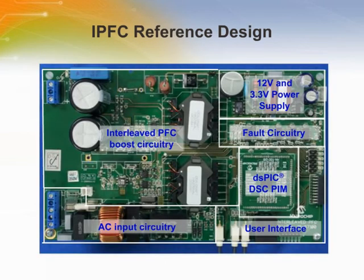The interleaved power factor correction reference design board can be divided into six main functional blocks: the power factor correction boost circuitry, the AC input block, the power supply block, the fault circuitry block, and the user interface and programming block. The two inductors can be seen for both stages, and MOSFETs with their respective diodes are mounted underneath the board with a heat sink for better heat dissipation.